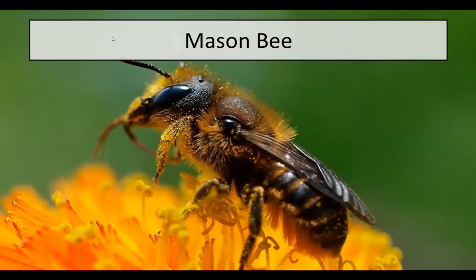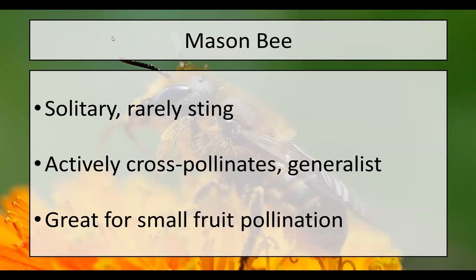Let's look at the mason bee. This one looks a little different — darker, with a lot of hair covering its body. This is one of our solitary bees. It rarely stings; you really have to mess with these guys to get them to sting you, they just want to run. While the mason bee is great at pollinating, it's one of our problem bees if you're trying to maintain an orchard, because these guys will actively cross-pollinate. However, if you're just planting to support native bee populations, this guy is great — he's a generalist and will go for everything.